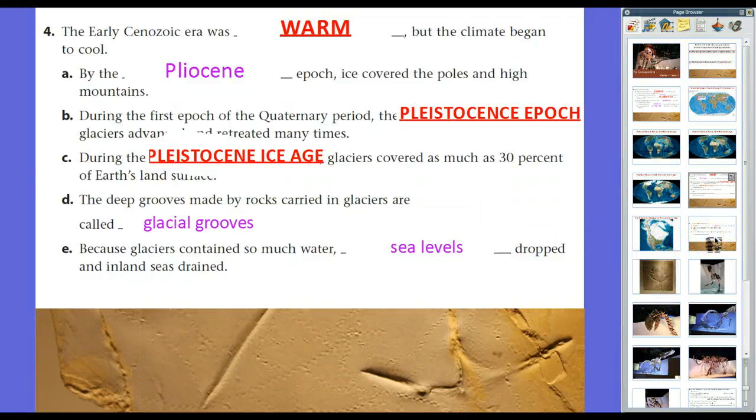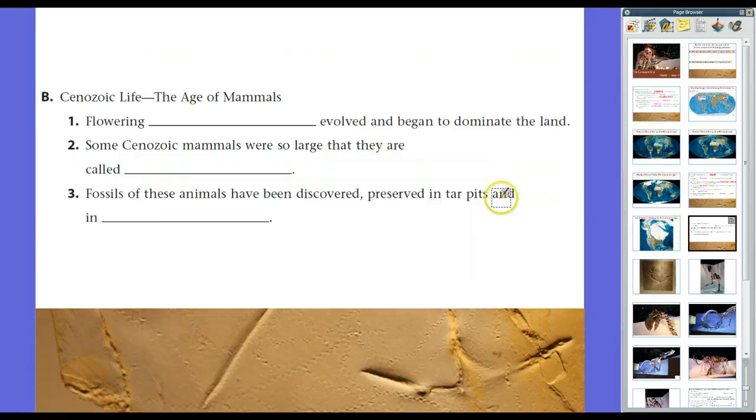Now, so that's the geology. Now, let's talk about the life, the Cenozoic life. Cenozoic life is the age of mammals. And by the time the Cretaceous period was in full swing and nearing its end, we were able to see the beginning of flowering plants. But flowering plants really took over in the Cenozoic era.